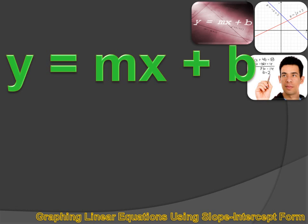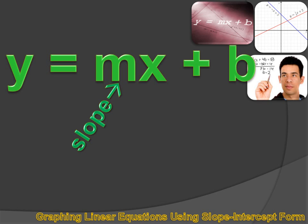What does y equals mx plus b mean? I can see there's a couple of variables in there — I can see there's a y and there's an x — but what's that m mean, and what's that b mean? Well, I'm going to tell you. The m is the slope of the line, and the b is the y-intercept.